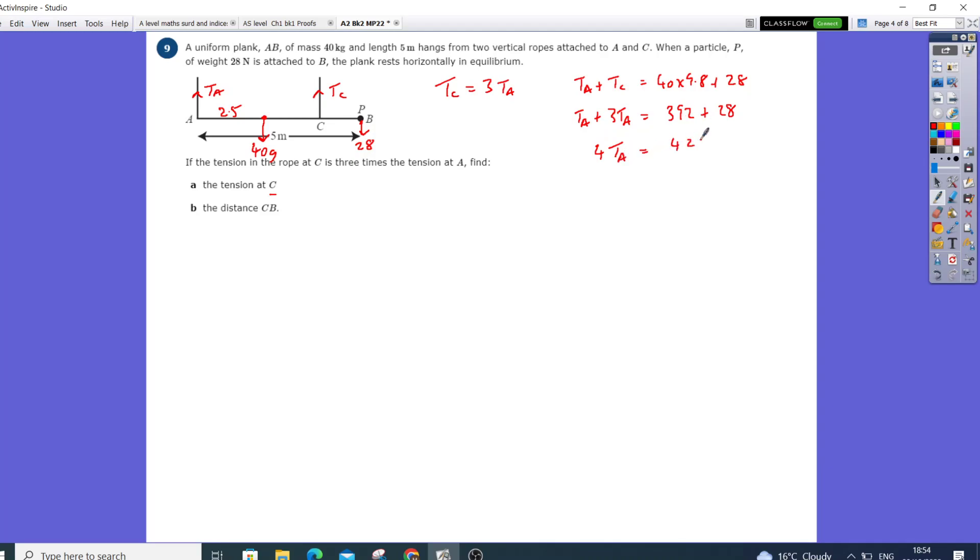So TA equals 105 newtons. Therefore the tension in C is three times 105, which gives me 315 newtons. Now for distance CB, I'll take the moment at A.